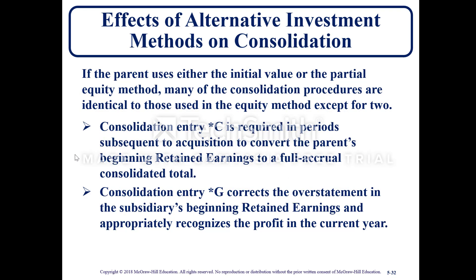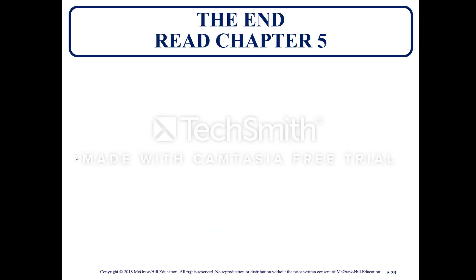For effects of alternate investment methods of consolidation: if the parent uses either the initial value or the partial equity method, many of the consolidation procedures are identical to those used in the equity method except for two. Consolidation entry C is required in periods subsequent to acquisition to convert the parent's beginning retained earnings to a full accrual consolidated total. Consolidation entry G corrects the overstatement in the subsidiary's beginning retained earnings and appropriately recognizes the profit in the current year. That concludes this presentation. Please read chapter five.